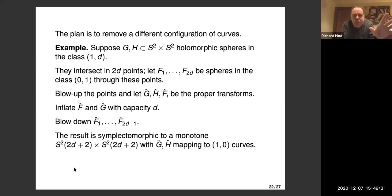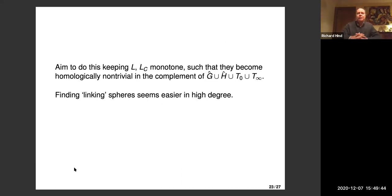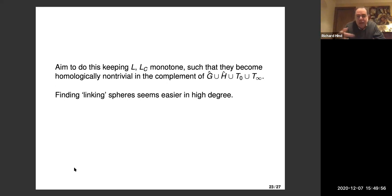The whole game is to choose very convenient G and H so that, when we do all this inflation, our mystery Lagrangian plus the Clifford torus stay monotone, and become homologically non-trivial in the complement of G and H. These are called linking spheres — we want to find spheres that link the Lagrangians, and that's easier to do in high degree.